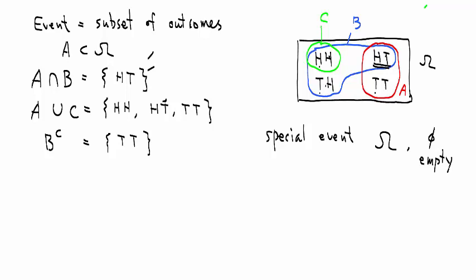There are some nice properties of the probability of these events. Now let's list some of them. Properties. Number one, we will always have the probability of the whole set equal to 1. The probability that some outcome happens, that's a sure thing. That's a probability of 1. The probability of the empty set, we always define that as 0.